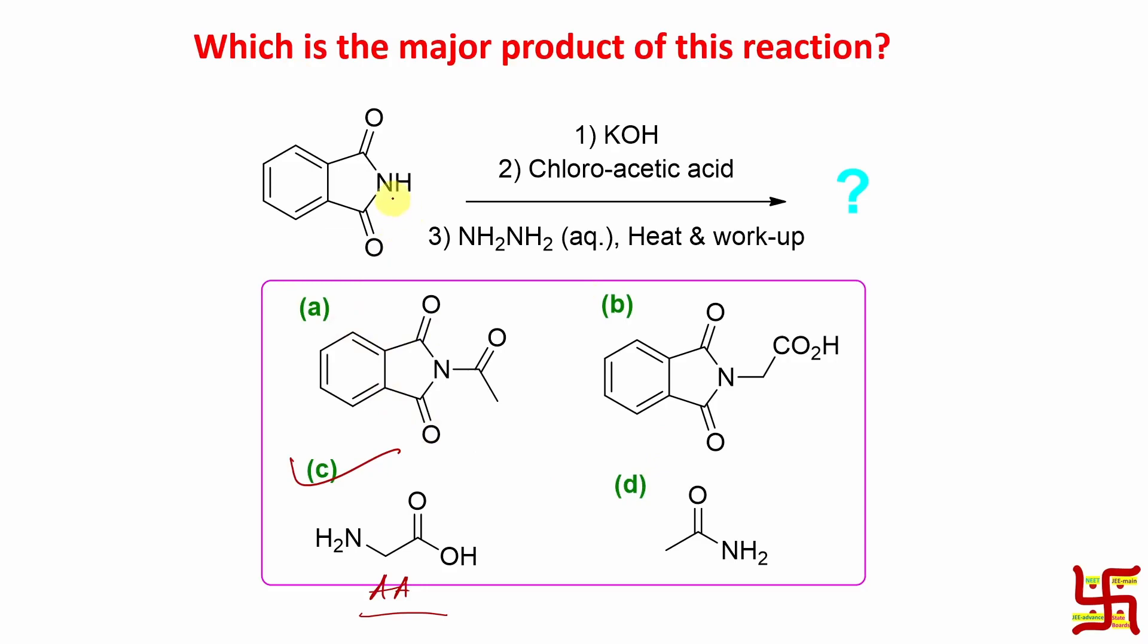So now, if you think why other options would not be possible, option A is an amide. Carboxylic acid I have taken. Hydrazine will not produce amide. This is ketone. That is not also possible. So this is carboxylic acid. By the way, it is the intermediate which will be hydrolyzed.